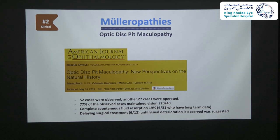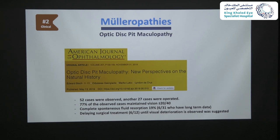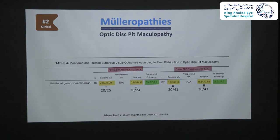Two studies on the natural history of optic pit maculopathy are instructive. In the first study of 52 monitored cases, 77% of observed patients maintained VA of 20/40 or better, and complete spontaneous resolution of fluid was seen in 19%. Importantly, there may be evidence that observing patients until visual deterioration happens would not affect anatomic and visual outcomes. This table shows long-term visual outcomes of observed patients divided by presence or absence of subretinal fluid — baseline and final VA for both groups is almost the same after three years.